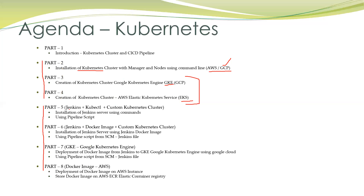In part five, we will use another server and install Jenkins on it using the command line. We also need to install kubectl, the tool used by Kubernetes, and run some specific Kubernetes commands. After this, we will deploy the application to the custom Kubernetes cluster. I call it a custom Kubernetes cluster because in part two we are manually creating the manager and nodes. We will deploy this application using the CI/CD pipeline to the part two Kubernetes cluster that was created earlier, using this pipeline script.